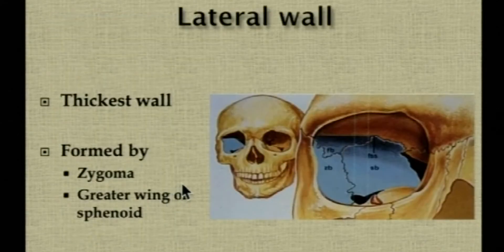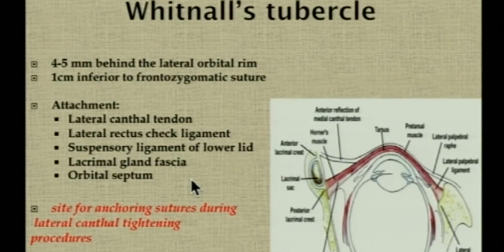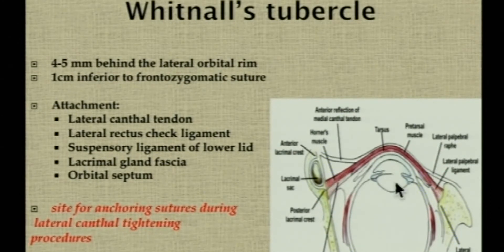The lateral wall is the thickest of all the walls and is separated from the roof by the superior orbital fissure and from the floor by the inferior orbital fissure. An important landmark is Whitnall's tubercle, which gives attachment to the lateral canthal tendon and is present one centimeter inferior to the frontozygomatic suture. When performing a swinging eyelid incision for orbital fracture repair requiring greater exposure, cantholysis is performed and the canthal tendon must be reattached to Whitnall's tubercle.